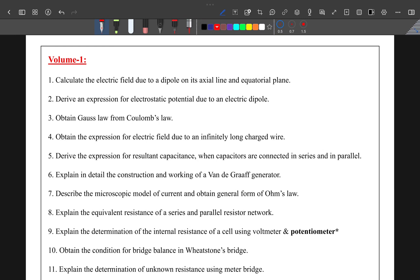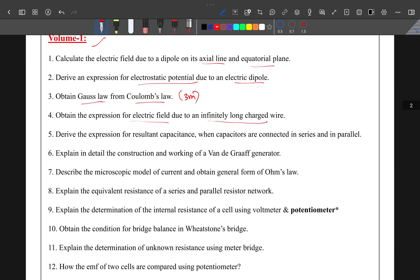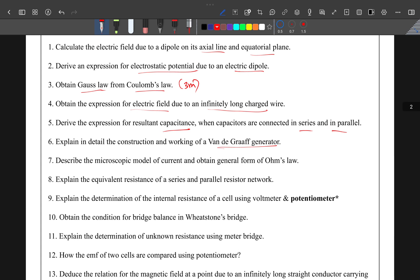Volume 1 as well as volume 2 - we have bookback questions. For volume 1: axial line, equatorial line, electrostatic potential due to electric dipole, Gauss law from Coulomb's law (3 marks, mostly 5 marks), electric field due to infinitely long charged wire, capacitors in series and parallel, and Van de Graaff generator. This is the first lesson.